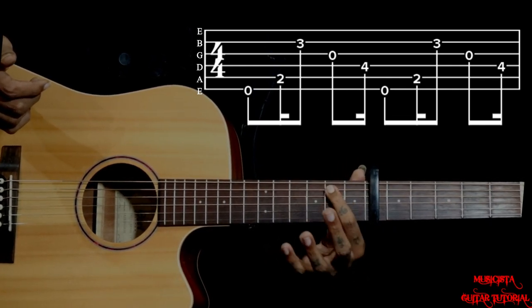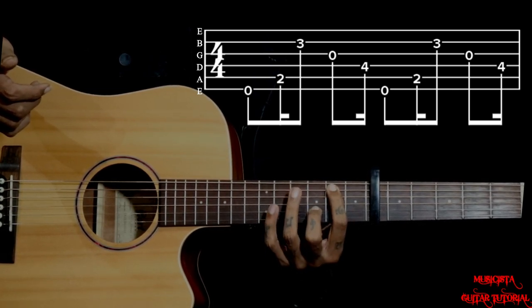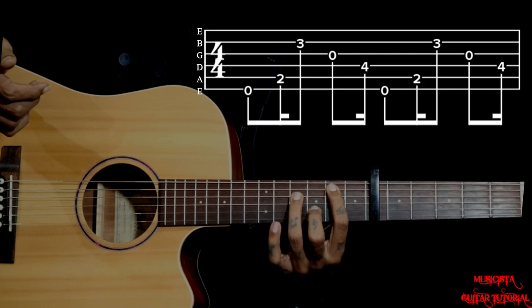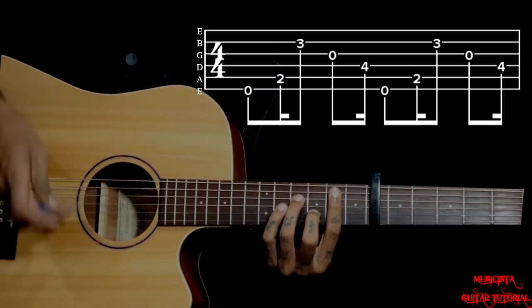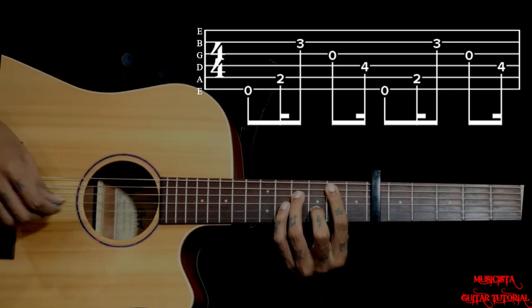So 5th string 2nd fret index finger, and on the 2nd string 3rd fret I'm using middle finger, and I'm using ring finger on the 4th string 4th fret. So this will be like a B-7 shape but we are keeping that 3rd string and 1st string open.